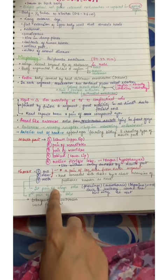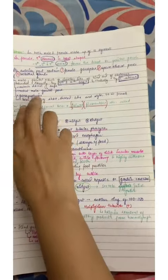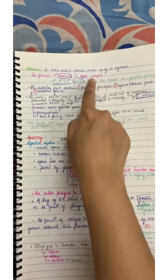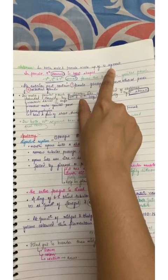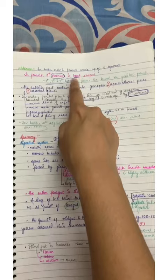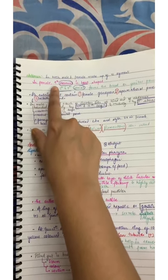Now come to abdomen. In the abdomen, see, both male and female made up of 10 segments. All these points you think blue is not so important, but if you don't read it then you will not remember it. So you have to read it, but keep in mind the highlighted things.